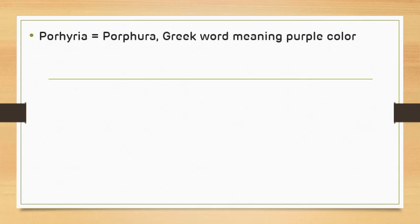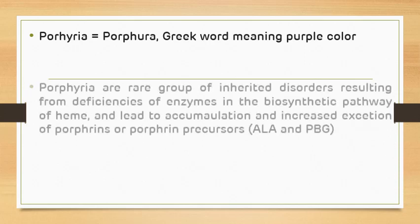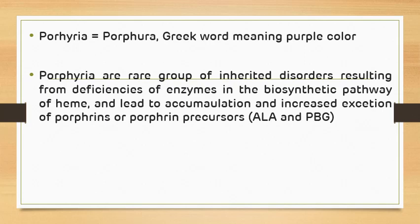Porphyria is basically derived from the Greek word 'porphura', which means purple in color. Porphyria is generally defined as a rare type of inherited disorder which results from the deficiency of enzymes related to heme synthesis, which leads to the accumulation and increased excretion of porphyrins or porphyrin precursors like ALA, delta-aminolevulinic acid, and PBG, that is porphobilinogen.